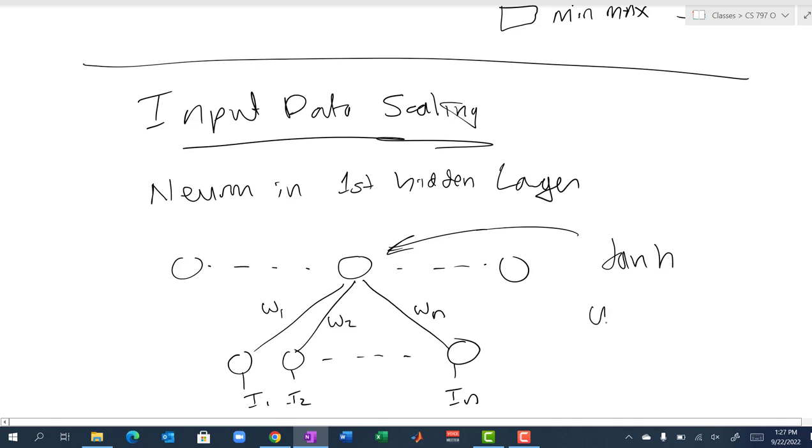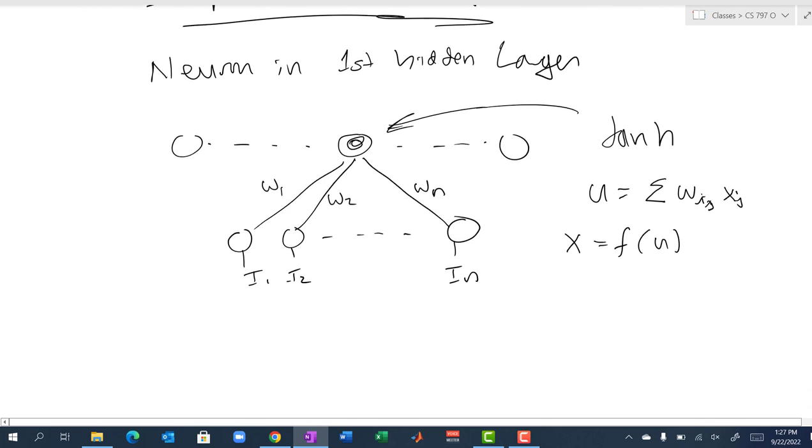Its net input is the sum of all the weights coming into that neuron times the activation values, and then we calculate its output. Its output is x as f(u). Let's say that all of these inputs that get passed through become the x's coming out, x1, x2, which is how this network works. You add all those up here and you get a large number.